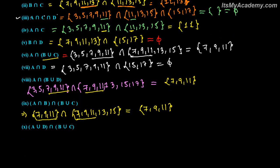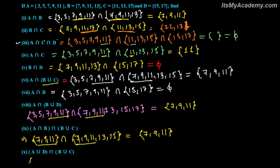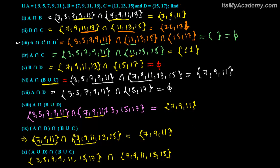And now the last one: A union D, intersection with B union C. A union D means all elements of A and D: A gives 3, 5, 7, 9, 11 and D gives 15, 17. So A union D is {3, 5, 7, 9, 11, 15, 17}. B union C we already have as {7, 9, 11, 13, 15}. What is common between these two? Seven, nine, eleven, and fifteen are common. So our answer is {7, 9, 11, 15}.